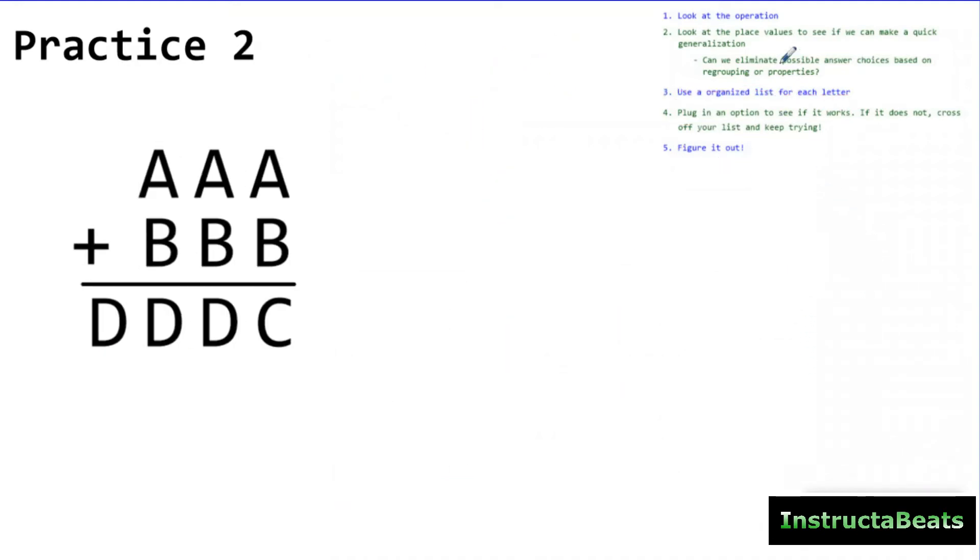So here we have practice number 2, and again, we want to first start by looking at the operation. So we're adding for this one. That's going to help me know what I'm doing when I'm regrouping, when I'm looking at the place values, what properties I should be looking for. I'm going to be using my properties of addition. Now I'm going to look at the place values and see if I can make a quick generalization. Can I eliminate any possible answer choices based on regrouping or properties, or do I know what one of the numbers is just by looking at my place values? And I can see right here that when I added A plus B, I had to regroup to my next place value. And again, let me write down my different options over here. So we have A, B, C, and D. And I know that D has to be 1. If I'm adding two digits, I'm only ever going to have to regroup 1 to the next place value, which means I can eliminate 1 as an option for all the rest of them.